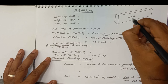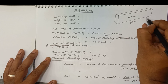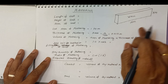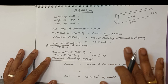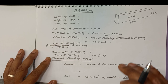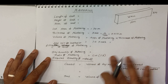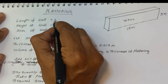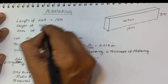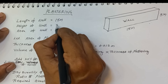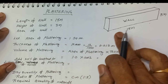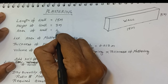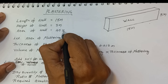This wall is 15 meters in length and 3 meters in height. So, what is the length of the wall? Length of wall is 15 meters. Height of wall is 3 meters. So, the area of this wall — total area is 15 x 3, that is 45 square meters.